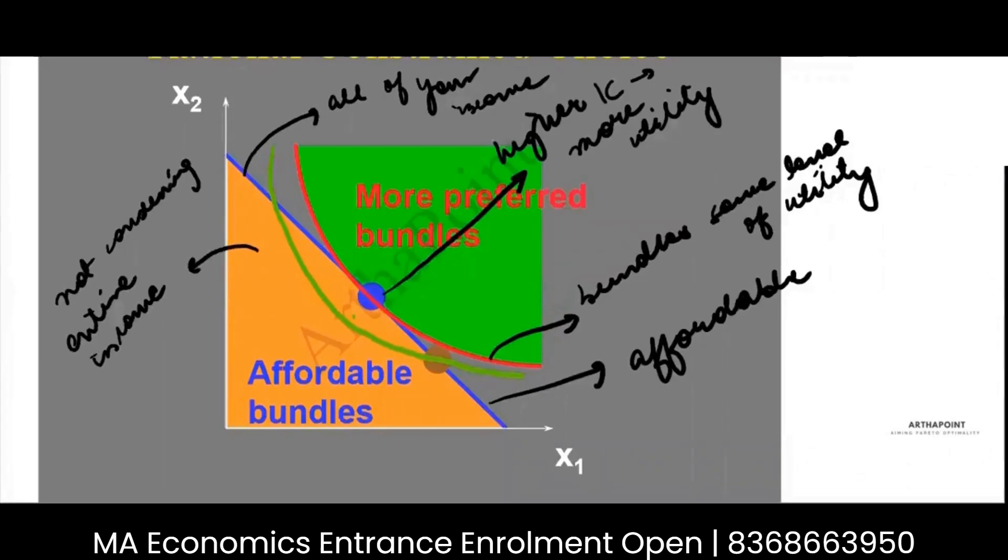Now, consider this indifference curve. This indifference curve has a lot of points on it that consume less than my income. There is also a point that consumes exactly equal to my income. Now, because it consumes exactly equal to my income, I should be able to also see if there is any other bundle which, although consumes equal to my income, maybe gives me a higher utility.